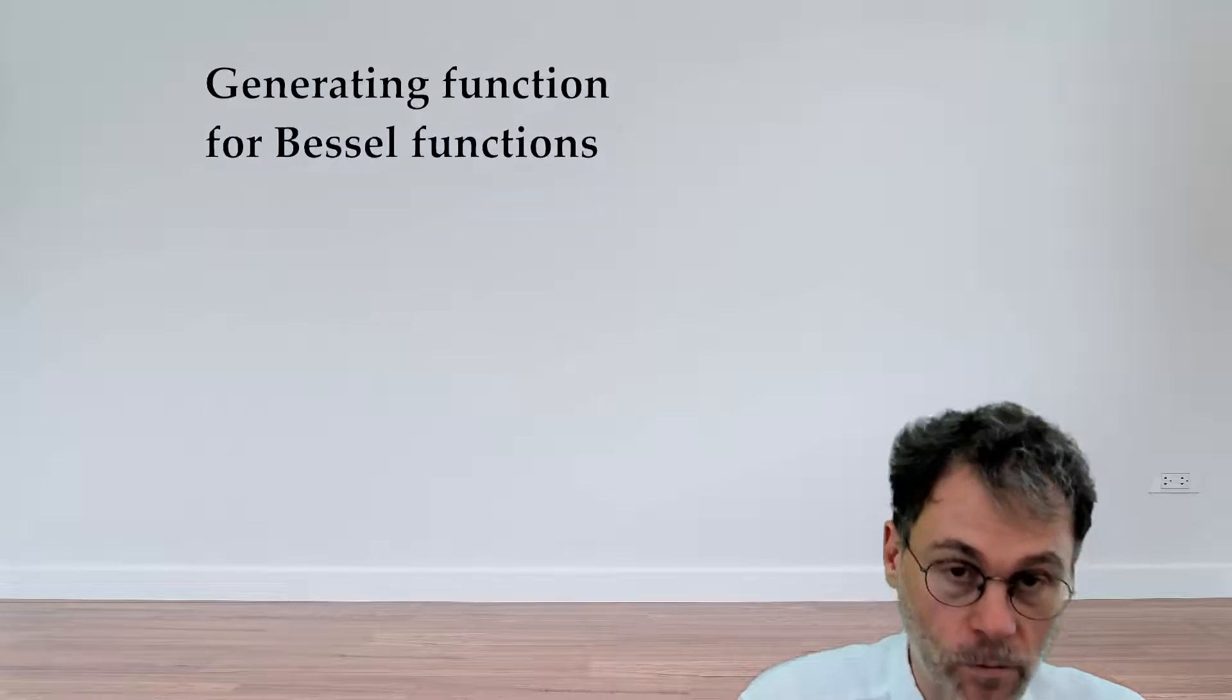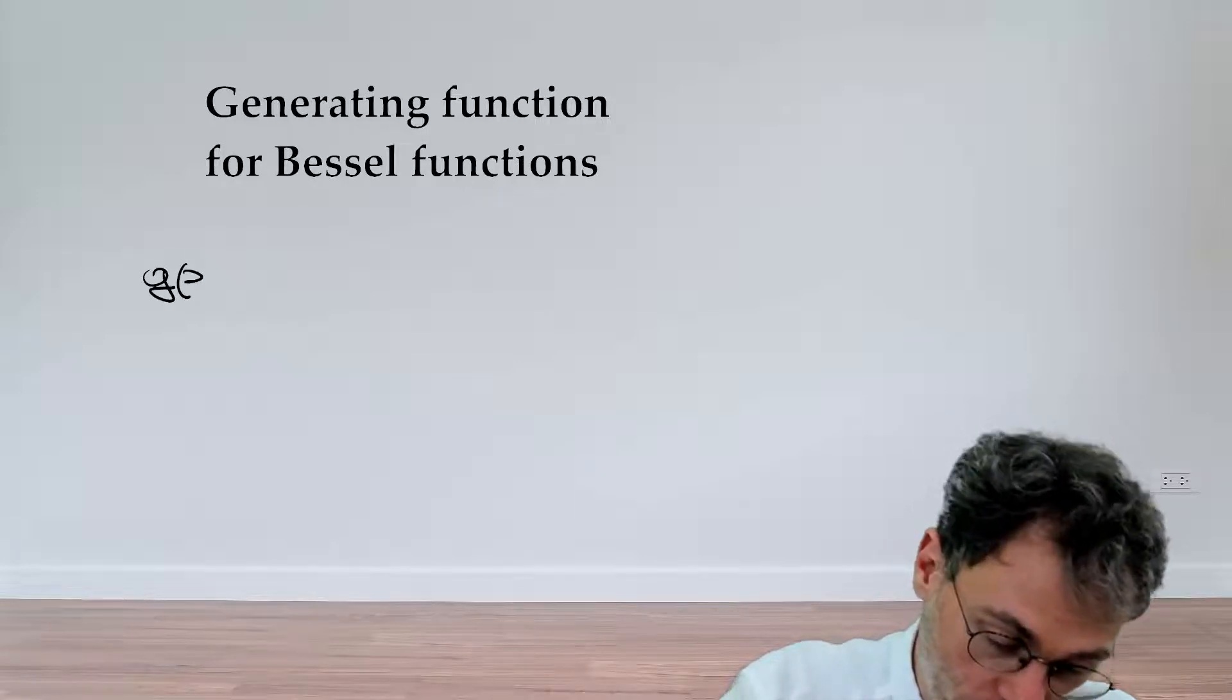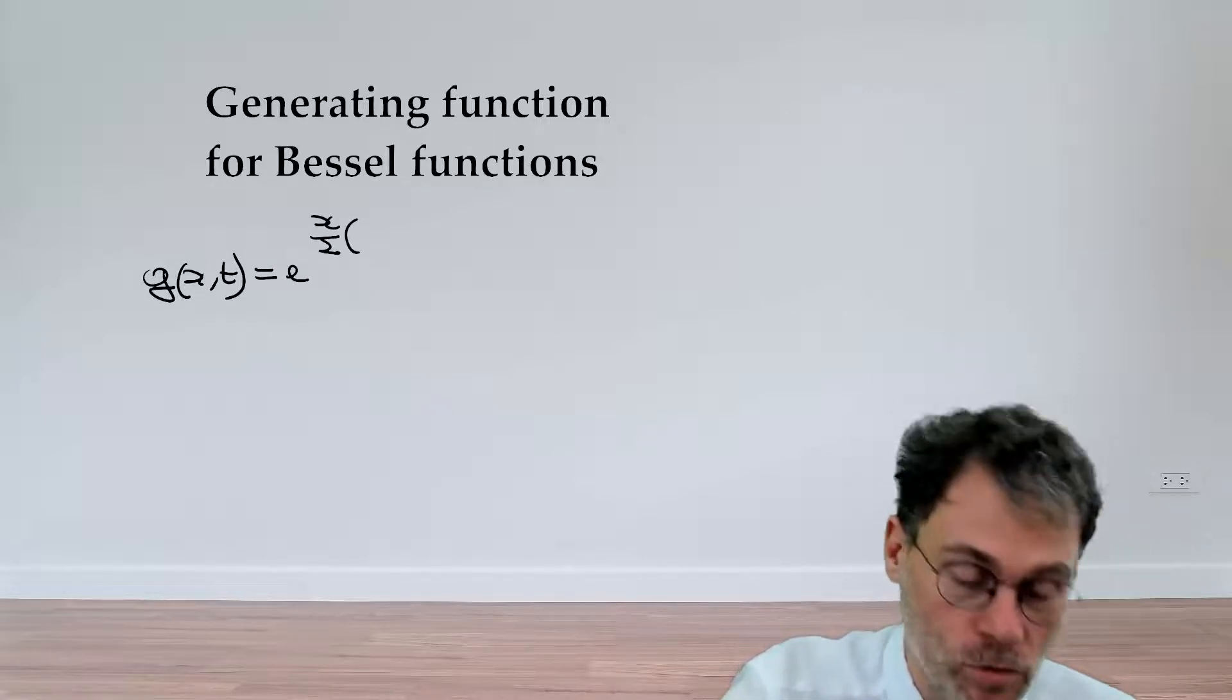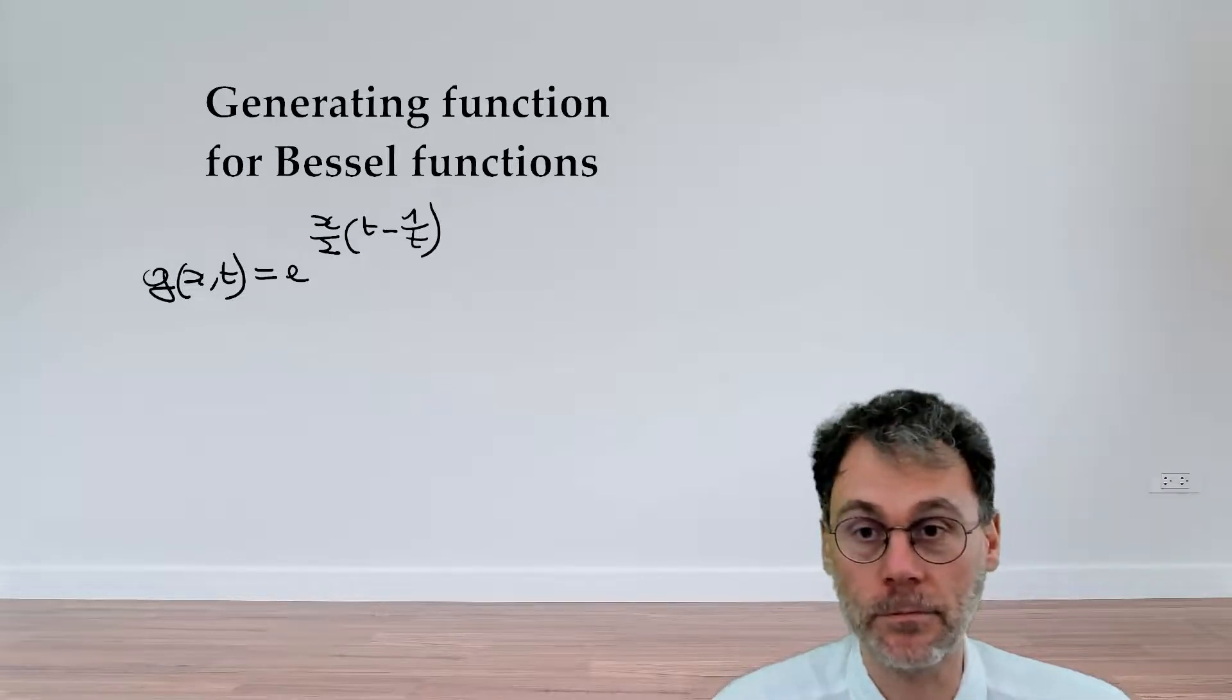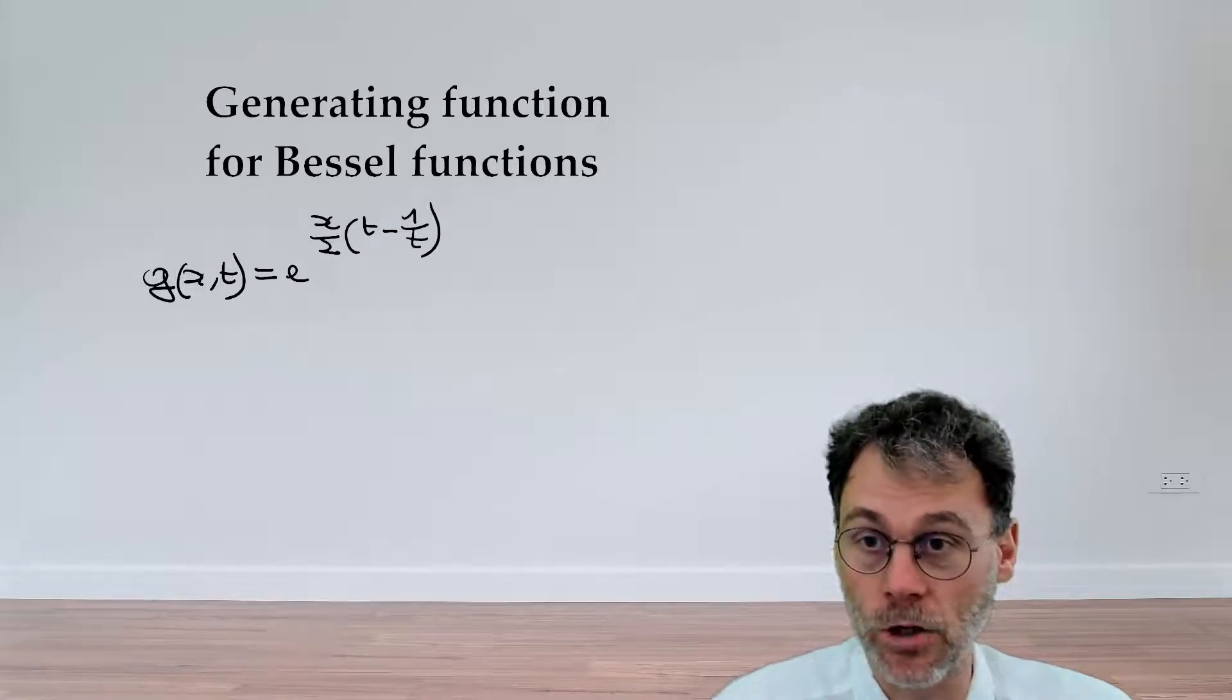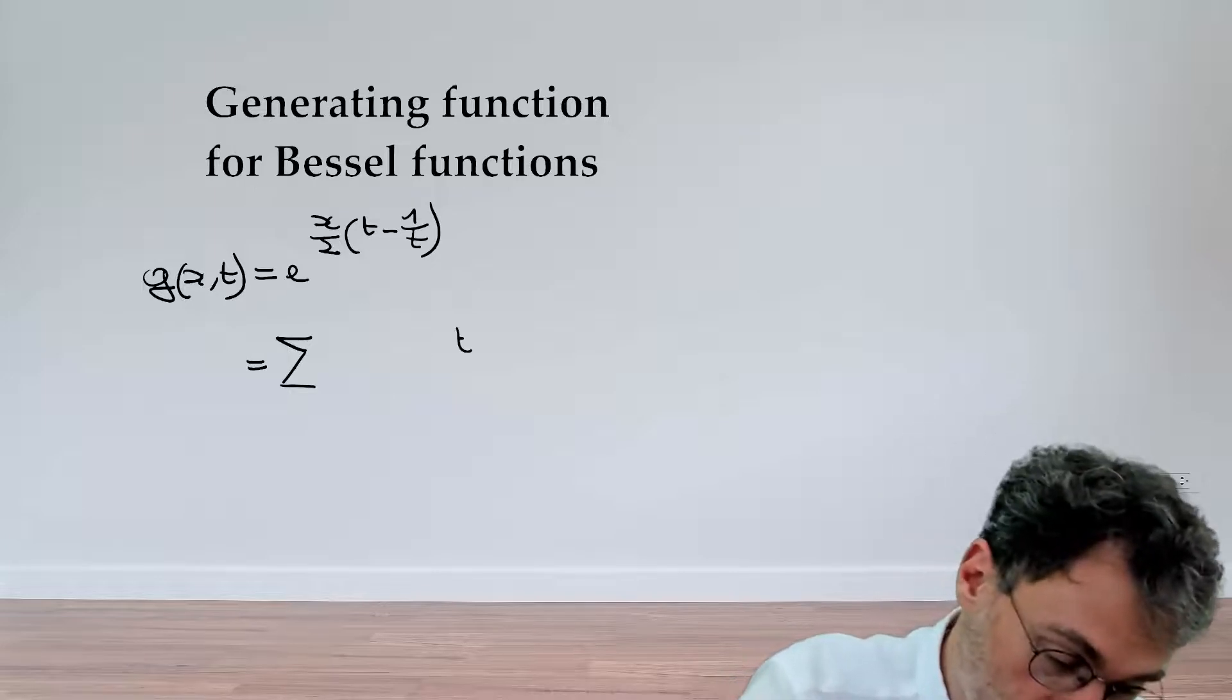So how are we going to define the Bessel functions in an alternative way? We're going to introduce a new function, a so-called generating function which is a function of x and t. That function is going to be exponential x over 2 times t minus 1 over t.